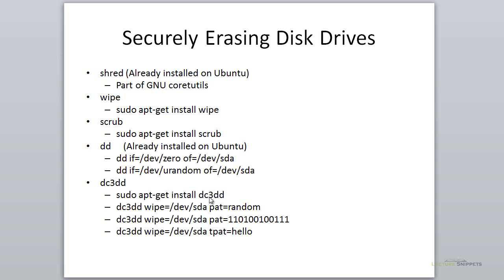While using the DC3DD command, there are a couple of different options. There's a wipe option — you'll see wipe equals the actual output destination, for example, wipe=/dev/sda. That's the drive that will actually get wiped out. If we don't use the pad option, it'll wipe with zeros. If you say pad=random, that'll use random ones and zeros.